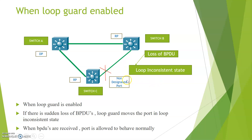The purpose of Loop Guard is to avoid loop formation. When Loop Guard is enabled and there is a sudden loss of BPDUs, this feature automatically moves the port into a loop inconsistent state to prevent loop formation and to avoid the non-designated port directly transitioning into a forwarding state.